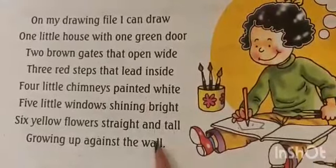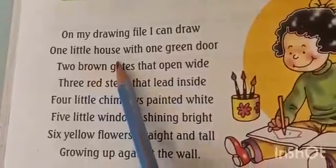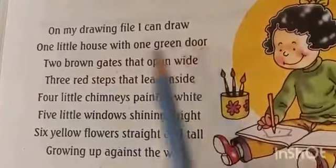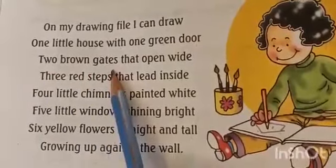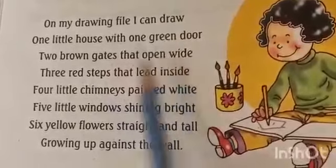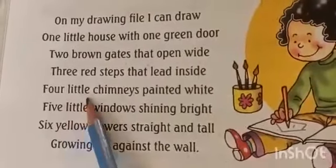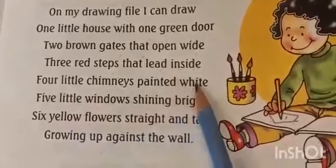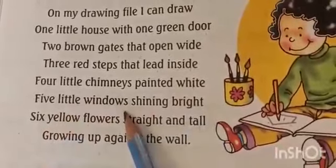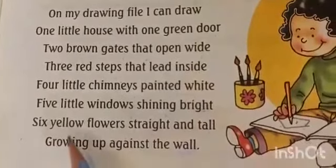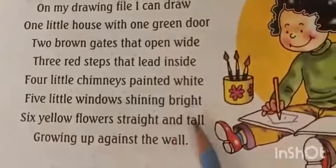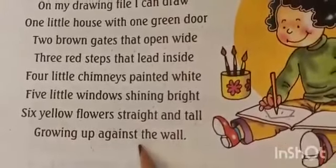Now you will speak it with rhythm. This is your drawing file. On my drawing file, I can draw one little house with one green door, two brown gates that open wide, three red steps that lead inside, four little chimneys painted white, five little windows shining bright, six yellow flowers straight and tall growing up against the wall.